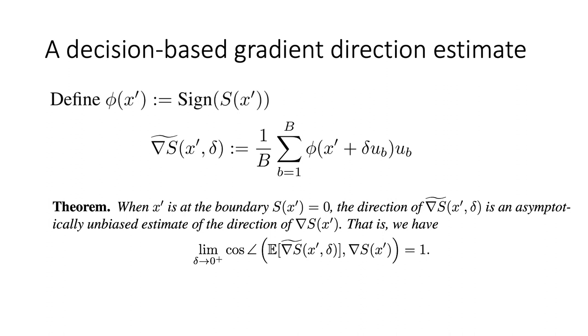In the paper, we also characterize the bound on the bias as a function of delta, which we have omitted here. Note that the theorem is only true at the boundary. This is also one of the motivations for the boundary search step of our iterative algorithm.